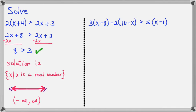And here's another one: 3 times X minus 8 minus 2 times 10 minus X is greater than 5 times X minus 1. If we distribute, now remember when you distribute a negative 2, you have to be careful here. So negative 2 times 10 is negative 20, and negative 2 times negative X is plus 2X.